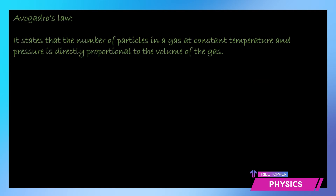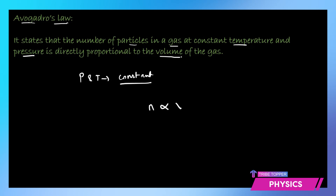Again, out of four variables three will be known and one unknown, which you can determine using this relation. The fourth law is Avogadro's Law, which states that the number of particles in a gas at constant temperature and pressure is directly proportional to the volume. With pressure and temperature both constant, the number of particles is proportional to volume — which is obvious, since a greater volume contains a greater number of particles.